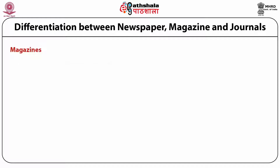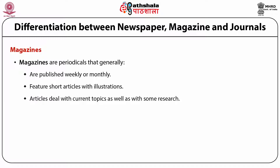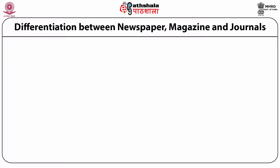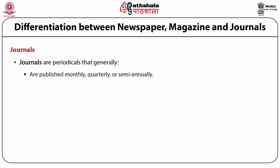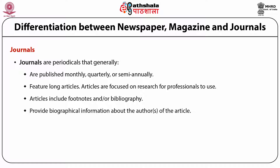Magazines are periodicals generally published weekly or monthly. They feature short articles with illustrations and deal with current topics as well as some research. They very seldom provide a bibliography or biographical information about authors. Journals, by contrast, are periodicals published monthly, quarterly, or semi-annually. They feature long articles focused on research for professionals. Articles include footnotes and a bibliography, and provide biographical information about the author.